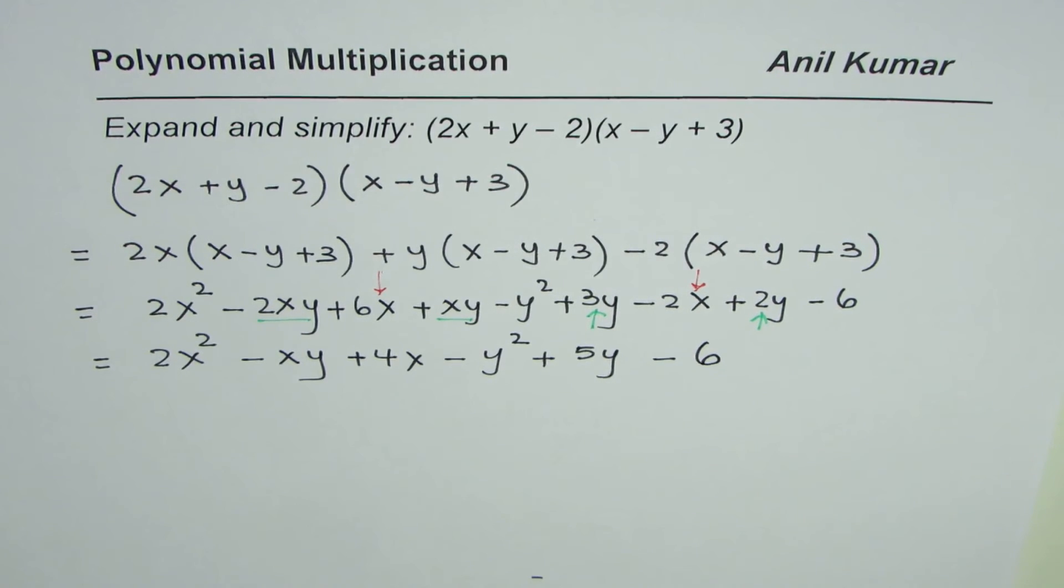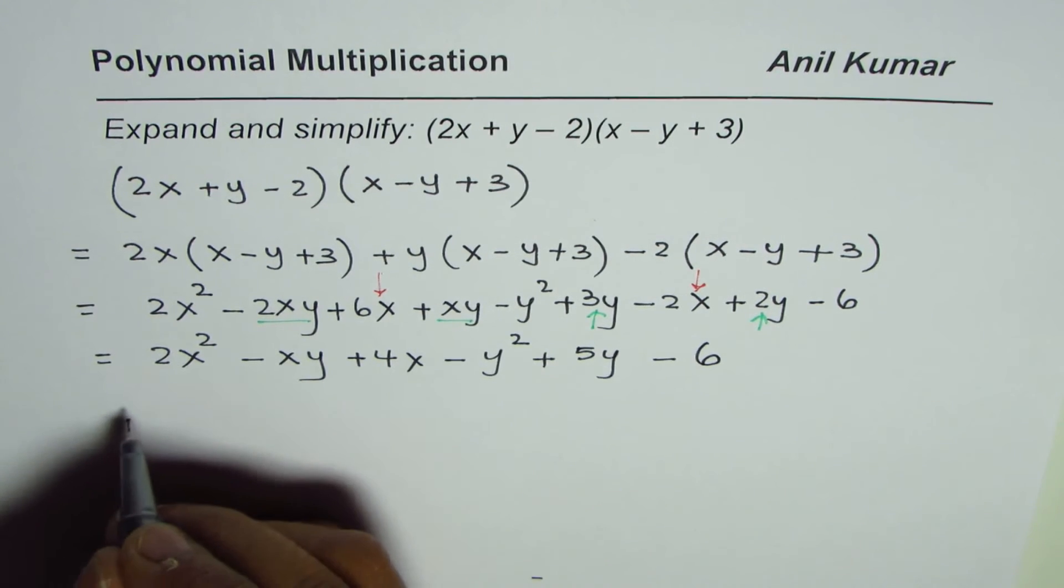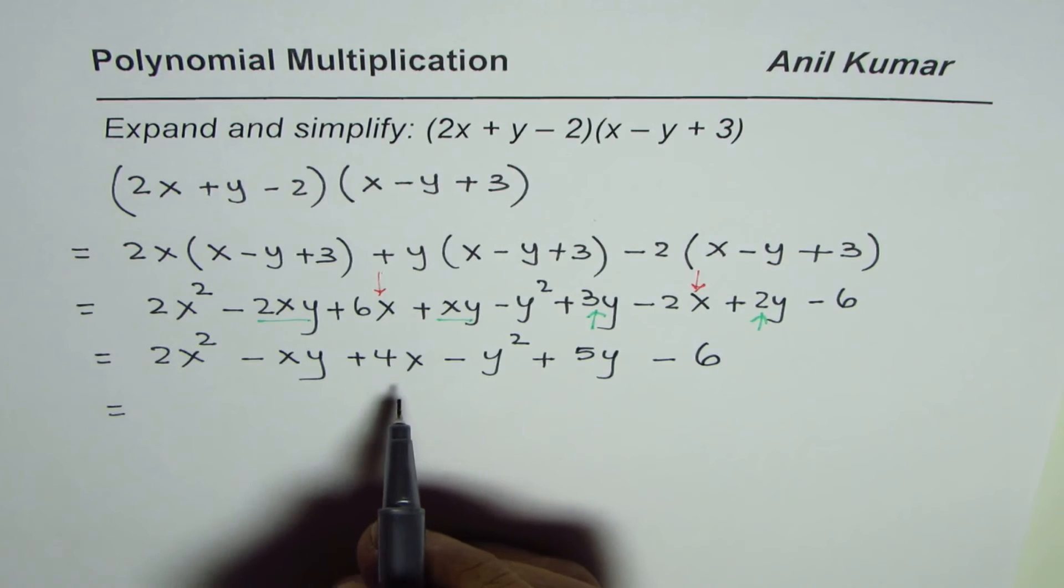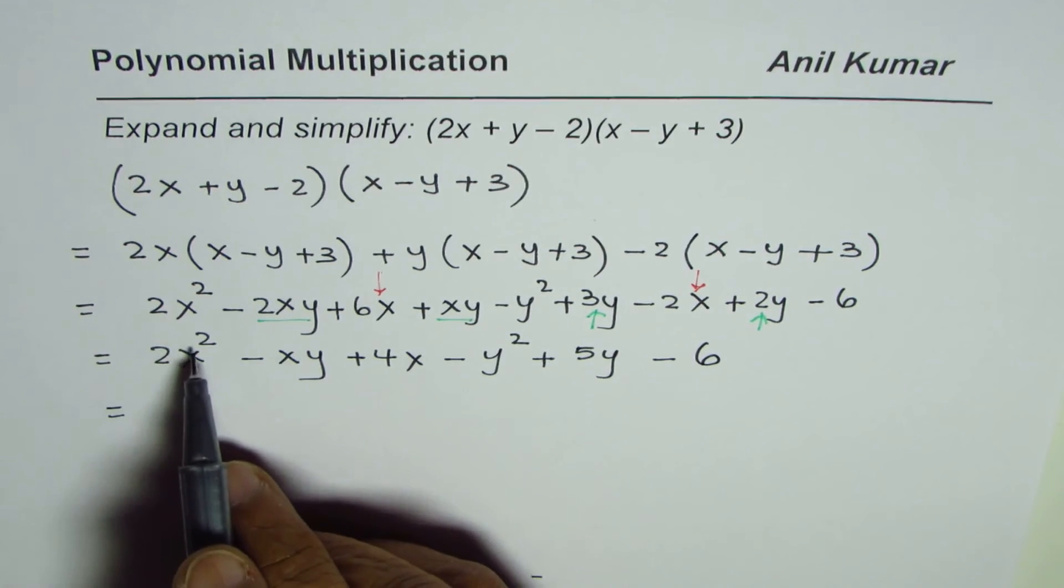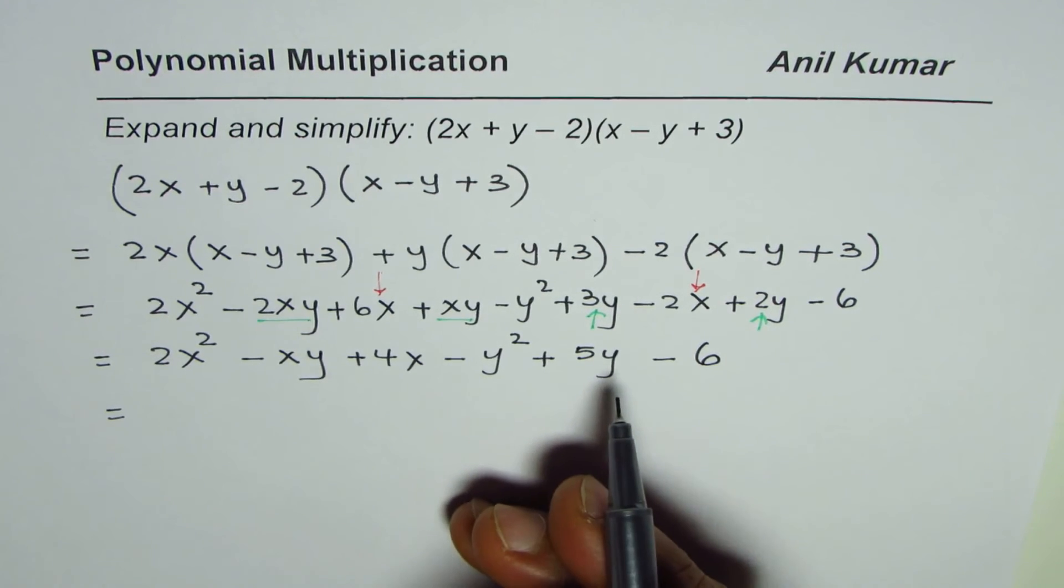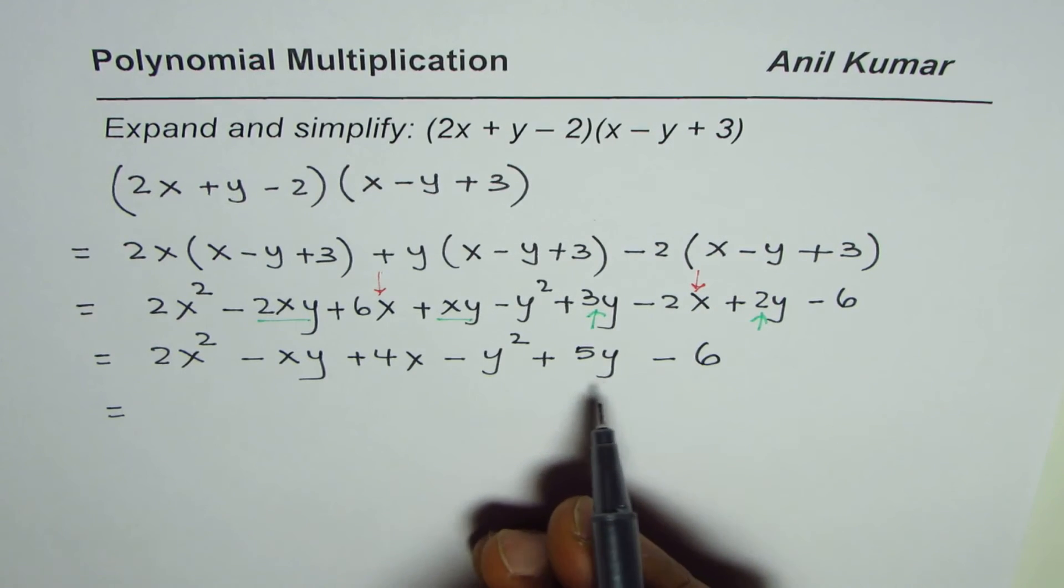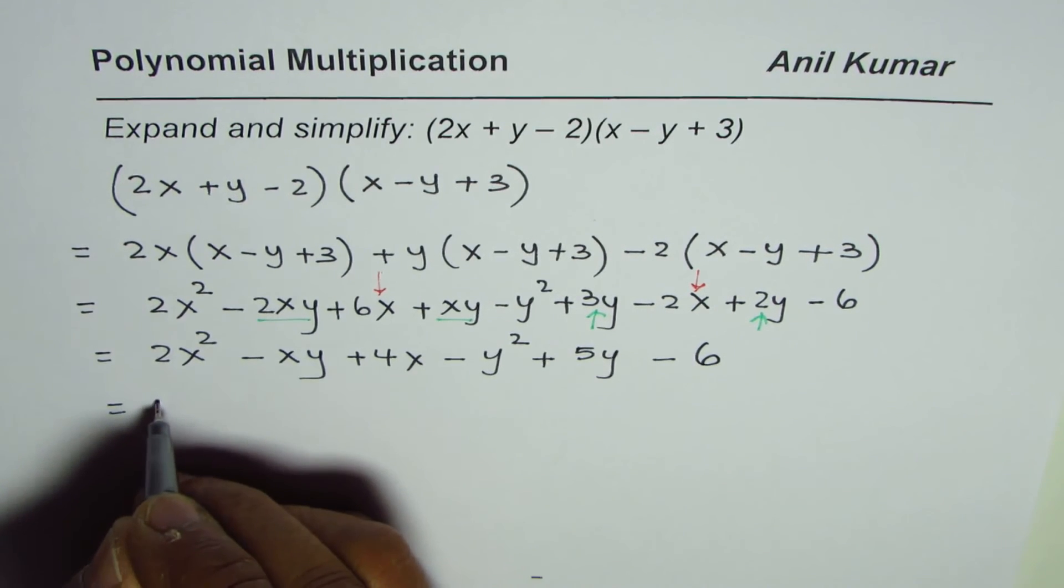That is how we get our equation. Now we can rearrange it. Normally when you rearrange, we rearrange with powers of x decreasing and y increasing. But here we have two variables. This is also good enough. We could write like this: 2x².